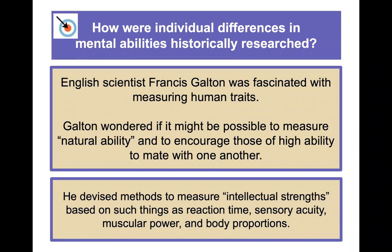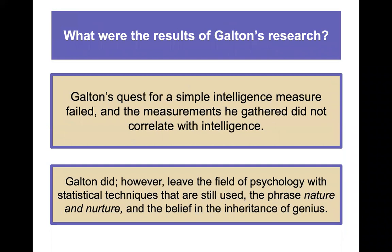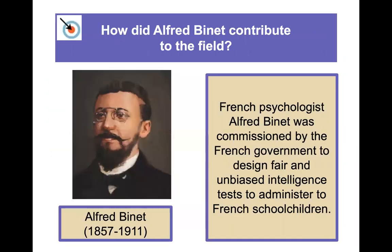Galton devised methods to measure intellectual strength based on reaction time, sensory acuity, muscular power, and body proportions. His quest failed because those measurements didn't really correlate with intelligence. However, Galton did leave the field of psychology with useful statistical techniques, the phrase 'nature versus nurture,' and the belief that there is a large genetic component to intelligence and genius.